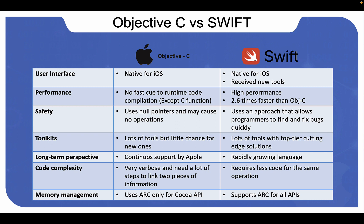From a memory management perspective — a big topic, especially for those coming from a C background — Objective-C uses ARC, but only within the Cocoa API. Other APIs such as Core Graphics do not support this ARC feature. For Swift, however, ARC is supported not only for the Cocoa Touch API, but for all APIs that allow memory management optimization similar to Cocoa Touch.